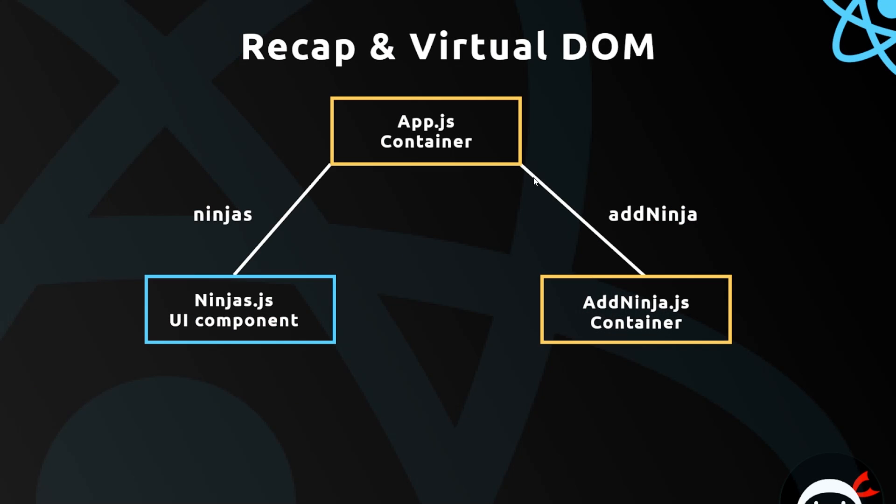Now we're working with a few different components — states, props, and functions. I thought this would be a good time to have a little recap and talk about what we've been doing over the last few lessons, and touch on the virtual DOM again. At the minute our application structure looks like this: we have the app.js component, the container component, which is the root component sitting at the top.